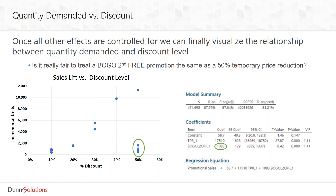How is that possible? The reason is that our first pass did not take into account the type of promotion. A BOGO — buy one get the second one free — is in a way a 50% off. However, you can't really treat it as a regular 50% temporary price reduction on a single item, because first you have to convince the consumer to buy the first item at full price, and only then can they get the second one free. So treating it as a 50% off is probably not a good idea. We ran a second step where we removed the effect of the promotion type — which was about 1,000 units — and re-charted the incremental sales at all the discount levels.